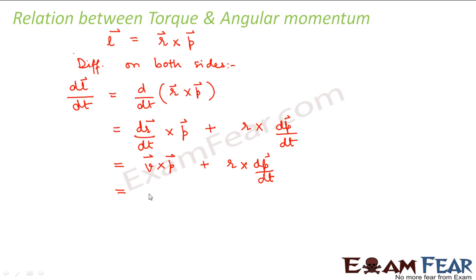Now this becomes equal to V cross, what is linear momentum? It is nothing but mass into velocity plus R cross dP by dt. Now what is this? This now becomes V cross V. So V cross V is V into V sine theta. So theta will be 0 because the angle between V and V is 0. So this entire term will be 0. So this plus R cross dP by dt.